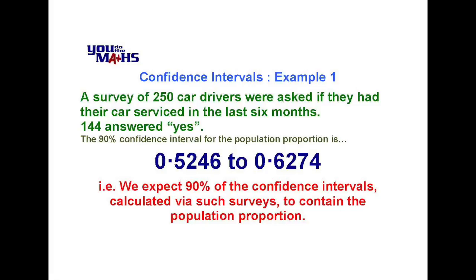So what is this telling us? It's saying that if we continue this process, in other words survey 250 drivers and then determine the confidence interval the same way as we have here, we could say that 90% of the time we'd expect to find the population proportion within the interval that we've found.